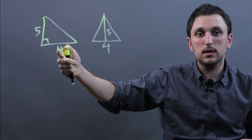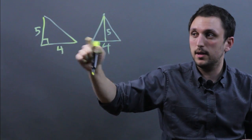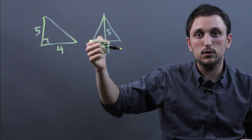They have the same area because 5 times 4 divided by 2 is 10, and here 5 times 4 divided by 2 is 10.